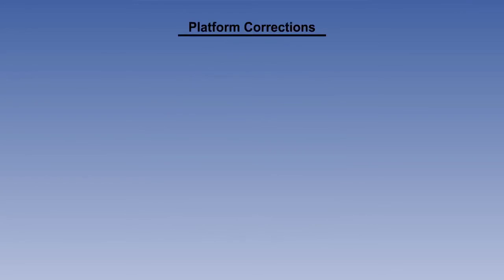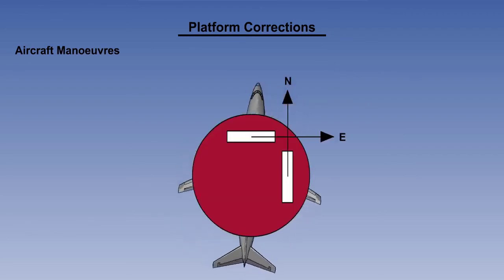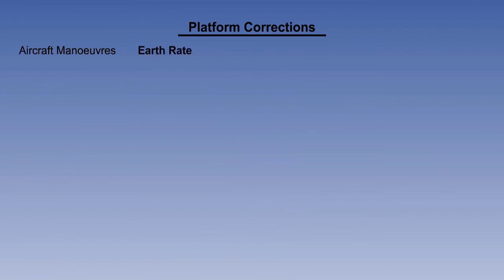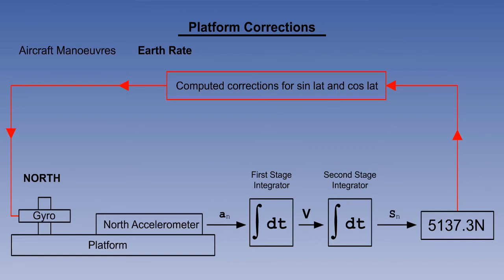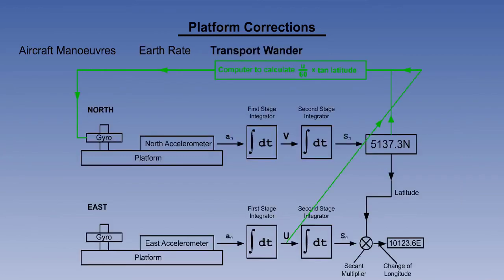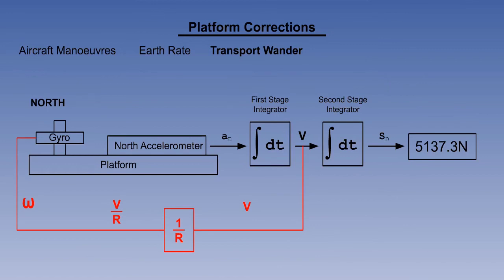Let's look at the full list of platform corrections now. Some have been met before, but two of them will be new. Firstly, there is the correction for aircraft manoeuvres — the platform has to be kept north-orientated, level in pitch, and in roll. Next is earth rate: the sine and cosine of latitude are continuously computed and fed back to the platform. There is transport wander: the horizontal component is corrected by continuously computing U over 60 tan latitude and feeding it back to the platform, and the vertical component is corrected by the V over R and U over R feedback loops, otherwise known as Schuller tuning.